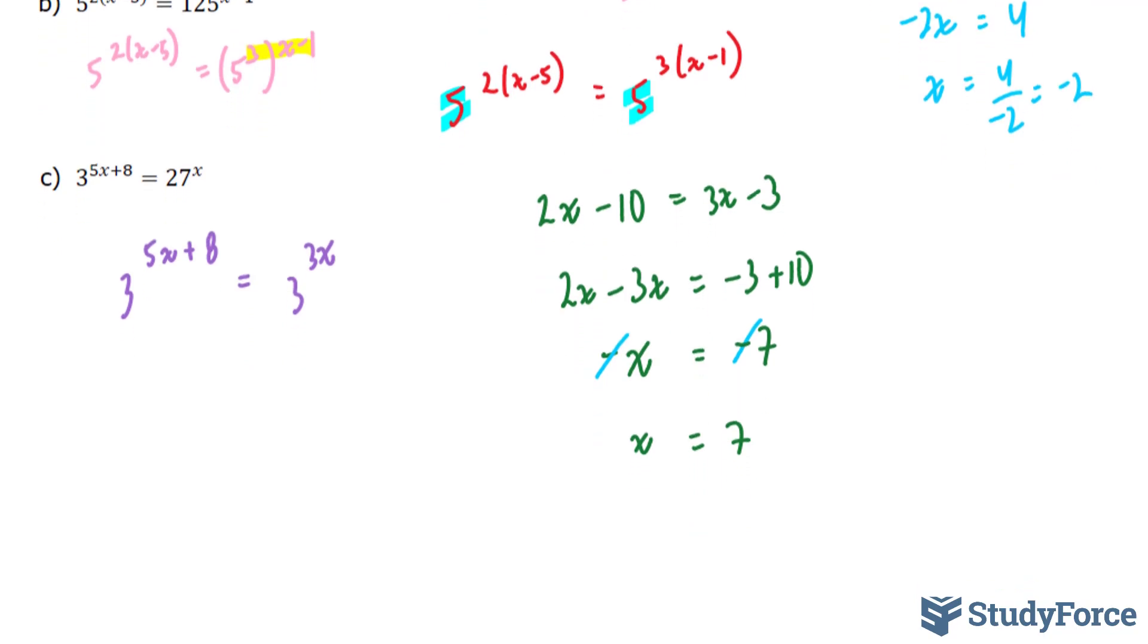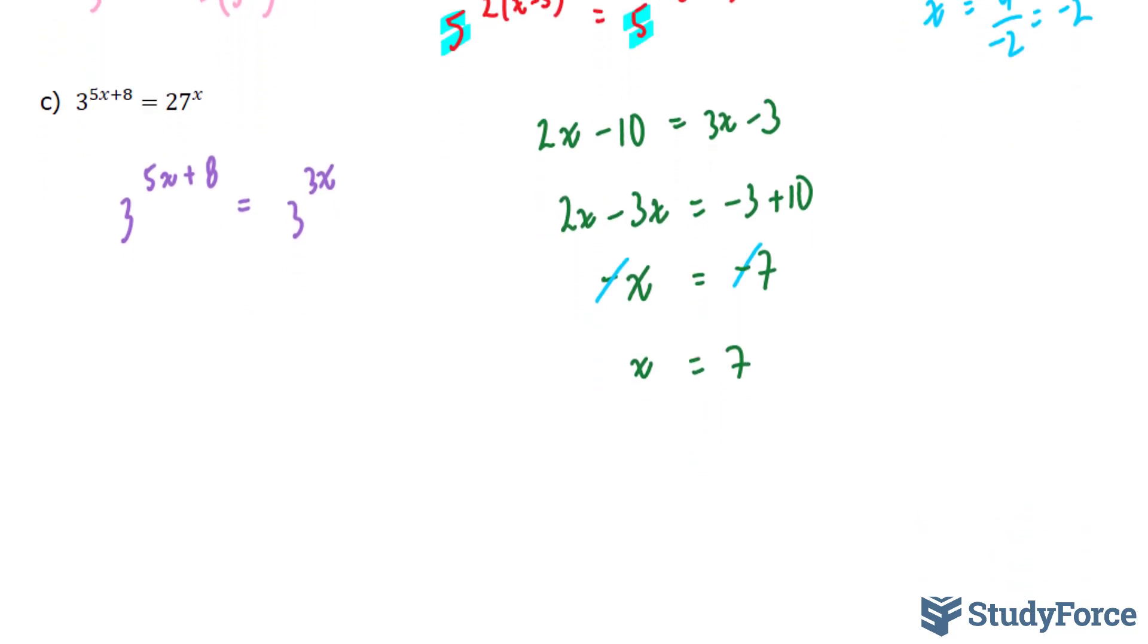Now, our next step is to solve for the exponents. 5x plus 8 is equal to 3x. Bring this over, 5x minus 3x is equal to negative 8. And now we're left with 2x is equal to negative 8, and therefore, x is equal to negative 4. I divided both sides by 2, and that gives me x is equal to negative 4.